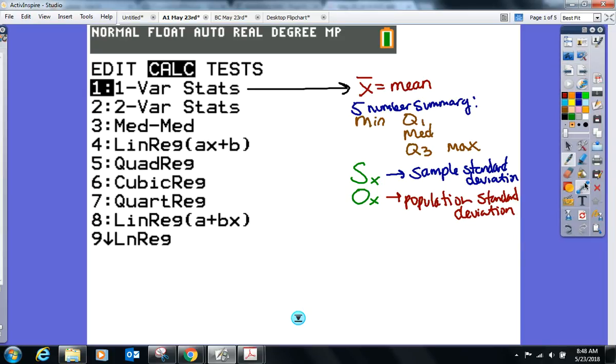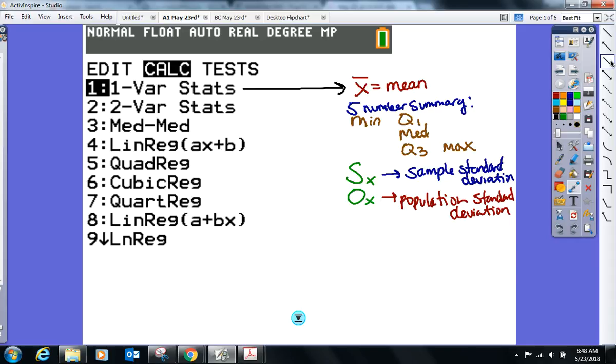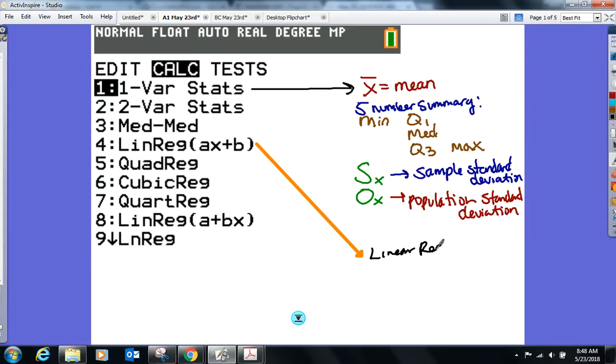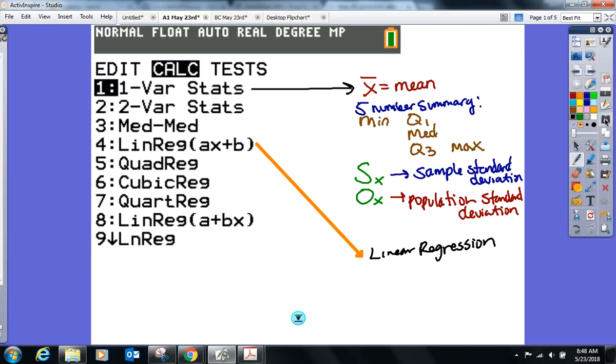All right. What others have we used on here? We've used definitely linear regression. Number four, never number eight. And again, that's a linear regression. What else up here? We've used two more. Well, one up here. One's hidden a little bit.